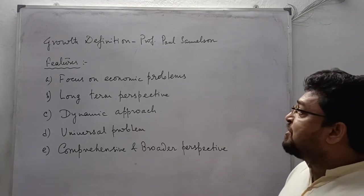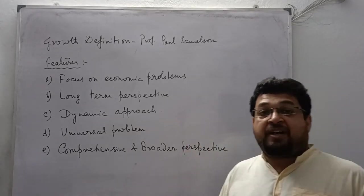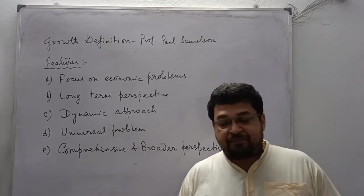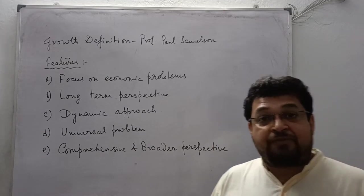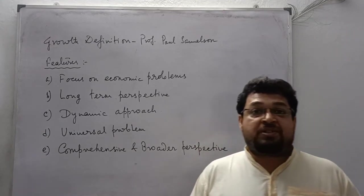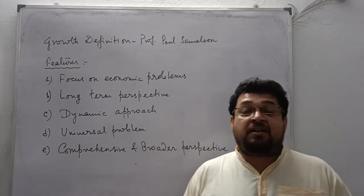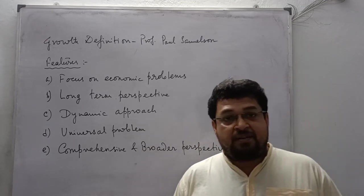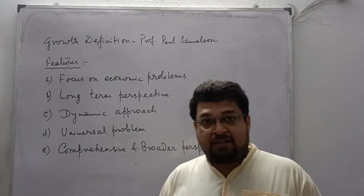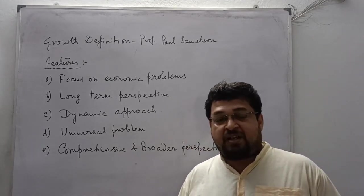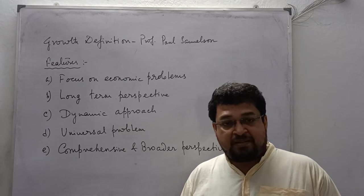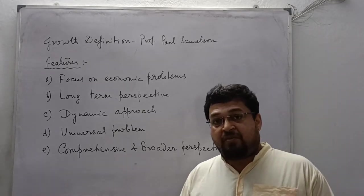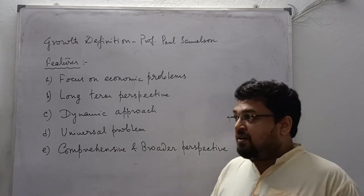The first feature focuses on economic problems: the problem of limited or scarce resources, and the problem of choice, because resources are alternatively used. This includes how money is being earned and spent — the money-earning process and how it is being utilized — all of which are considered core problems of the economy.